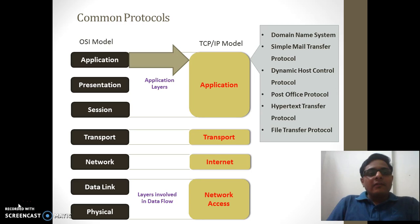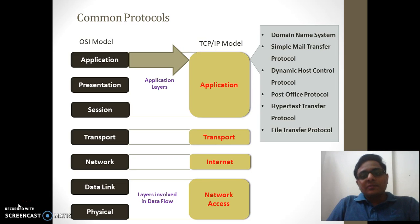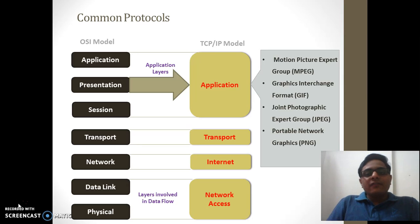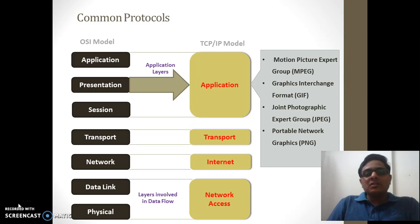These are some of the common protocols at the application layer: Domain Name System (DNS), Simple Mail Transfer Protocol (SMTP), Dynamic Host Control Protocol (DHCP), and Post Office Protocol (POP) — currently version 3. We also have Hypertext Transfer Protocol (HTTP) and File Transfer Protocol (FTP). At the application layer, there are also different formats for images and videos, such as MPEG for video, and GIF, JPEG, and PNG for images. These formats are the responsibility of the presentation layer to display data on the end user's device.